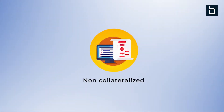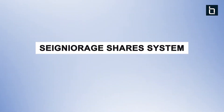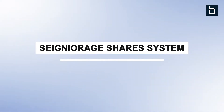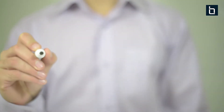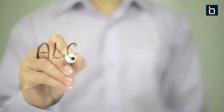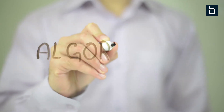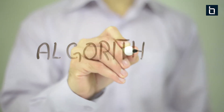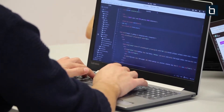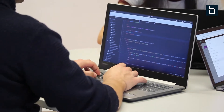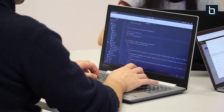Non-collateralized stablecoins are based on the concept of a seigniorage shares system. Seigniorage is the difference between the value of money and its printing cost. These coins depend on an algorithm that changes the supply volume to control their price. Using smart contracts, these stablecoins are sold if the price falls below the pegged currency, and more tokens are supplied to the market if the value rises above the pegged currency.